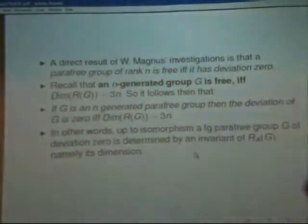And let me just say this because I want to drag you into algebraic geometry as soon as possible. A direct result of Magnus investigations is that a para-free group of rank N is free if and only if it has deviation zero. Now recall that an N-generated group G is free if and only if the dimension of the group G is equal to 3N. So it follows that if G is an N-generated para-free group, then the deviation of G is zero if and only if the dimension of the spatial representation of G is equal to 3N. So we have dragged this thing into an invariant of algebraic varieties. In other words, up to isomorphism, a finitely generated para-free group G of deviation zero is determined by an invariant of an algebraic variety named the spatial representation of G over A and its dimension.